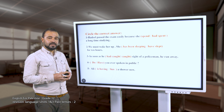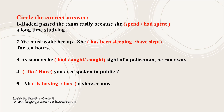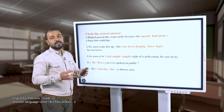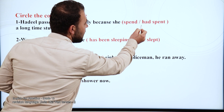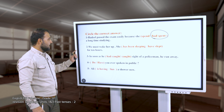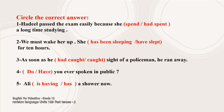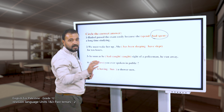Activity three: circle the correct answer. Sentence one: 'Hadil passed the exam easily because she had spent a long time studying' - she passed because of what she had done before, so past perfect. Sentence two: 'We must wake her up - she has been sleeping for 10 hours.' The subject is singular so we don't use 'have'; and this action is still continuous, so we use 'has been sleeping.' Sentence three: 'As soon as he caught sight of a policeman, he ran away' - two actions completed in the past.